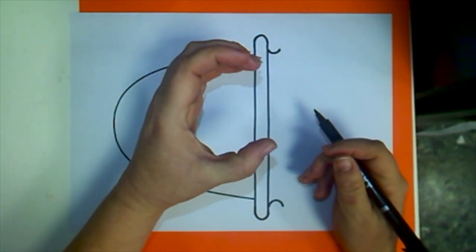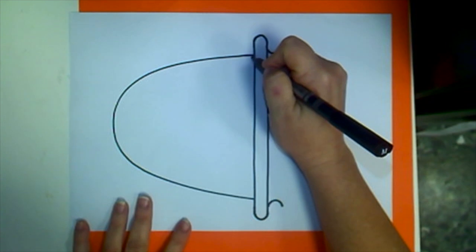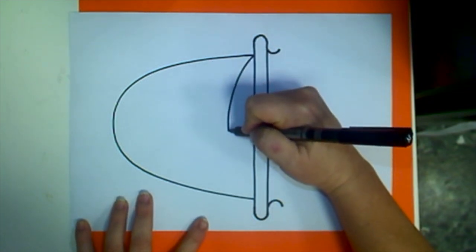Inside you're going to draw a very lazy letter C and it's going to go from one corner to the other corner with the bump in the middle.